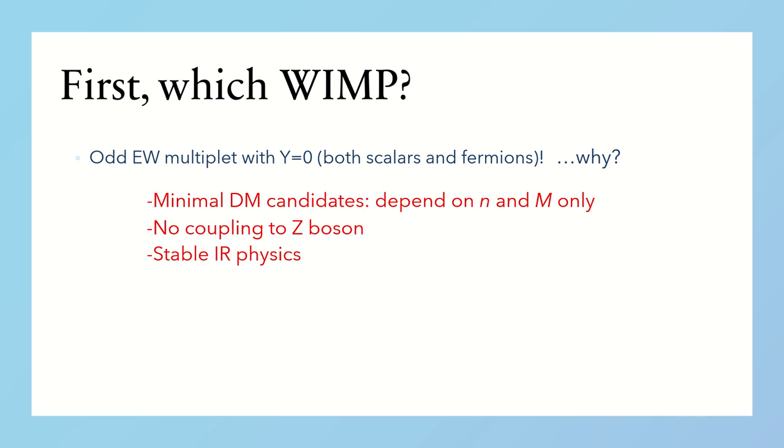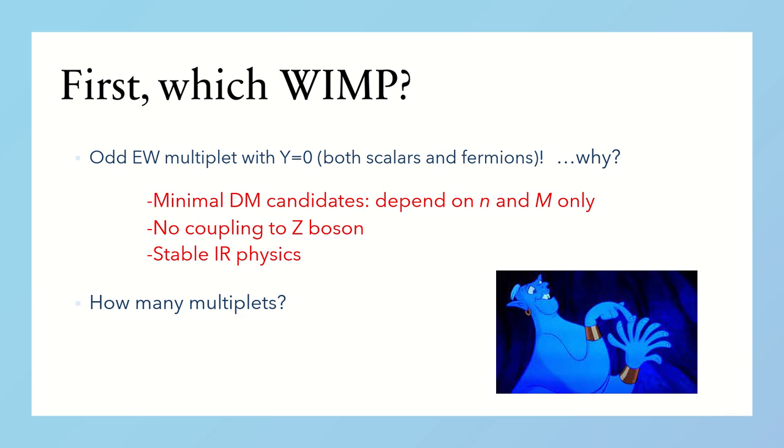Okay, now that we have defined our WIMP, we need to know how large is the window that we want to close, so how many multiplets we have to study. In this case, partial wave unitarity applied to the annihilation cross-section of dark matter into standard model forces the dimension of the multiplet to be smaller than 15, so that overall we need to study only six candidates.